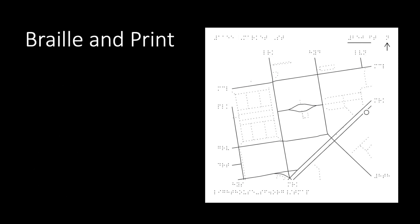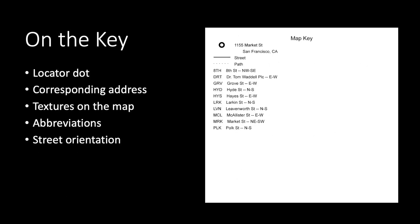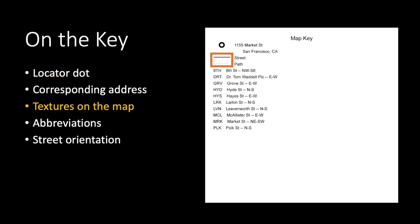Map files contain both braille and print text. Each map also has a corresponding legend or key. This includes the locator dot, its corresponding address, textures used on the map, as well as abbreviated street names written out in full and their approximate orientation.